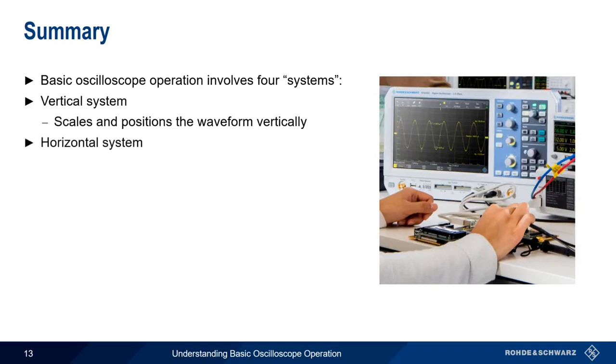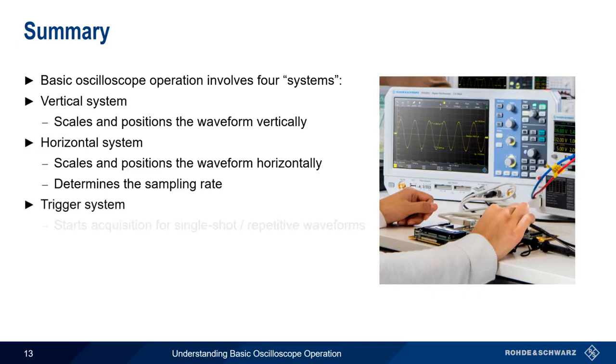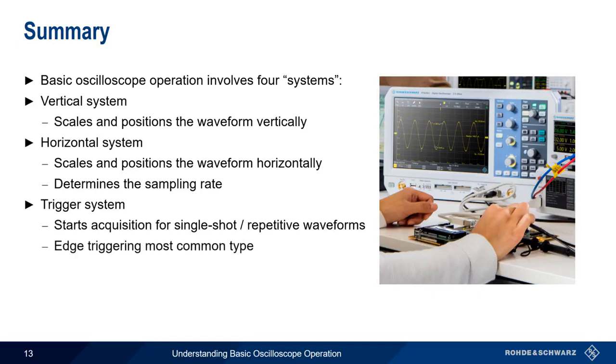The horizontal system is used in a similar way for the horizontal axis, but it also provides a way to change the sampling rate that's used to acquire waveforms. The trigger system starts the acquisition for both single-shot and repetitive waveforms, and triggering on the rising or falling edge of a signal is the most common of the many trigger types available.